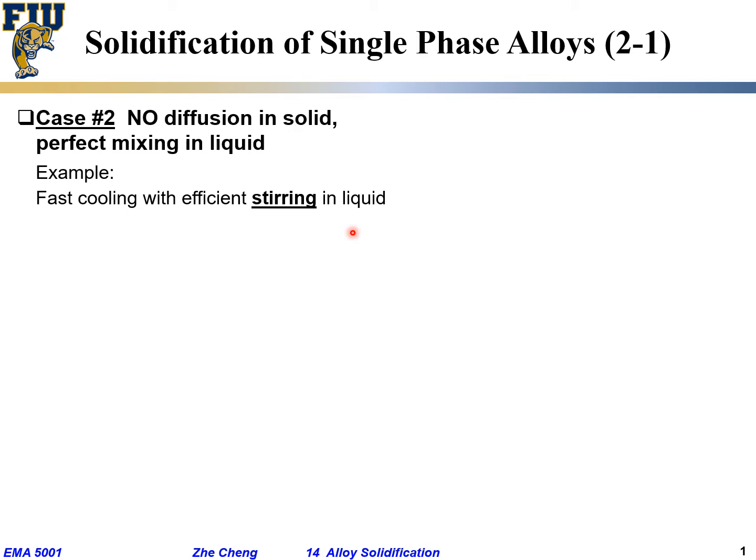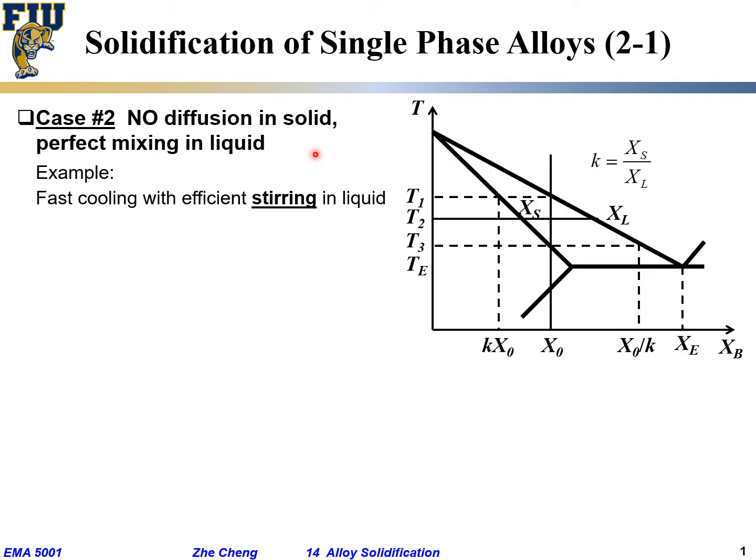For alloys like copper-nickel, diffusion occurs by substitutional diffusion through the vacancy mechanism. Is that fast or slow? Quite often, substitutional diffusion within an alloy like copper-zinc or copper-nickel is very, very slow, because you have to wait for vacancies. So for simplicity, we assume no diffusion in solid and perfect mixing — uniform composition — in liquid.